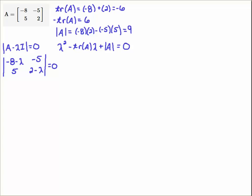So here's the matrix A. And I'm going to use this nice formula for 2x2 matrices, where you have lambda squared minus the trace of A lambda plus the determinant of A equals 0. This will be the characteristic equation for computing the eigenvalues of this matrix.